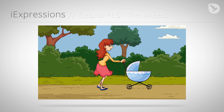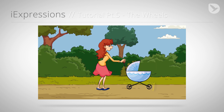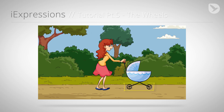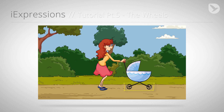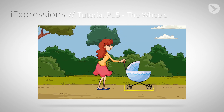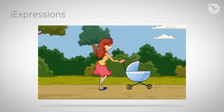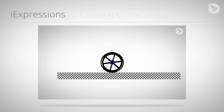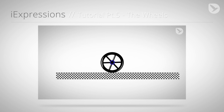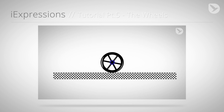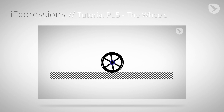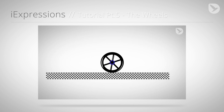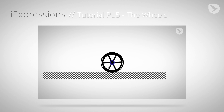In the fifth part we take care of the wheels of our baby buggy. We do not just ensure that the wheels rotate when the buggy moves, but we also make sure that the reflections on the spokes appear and disappear naturally.